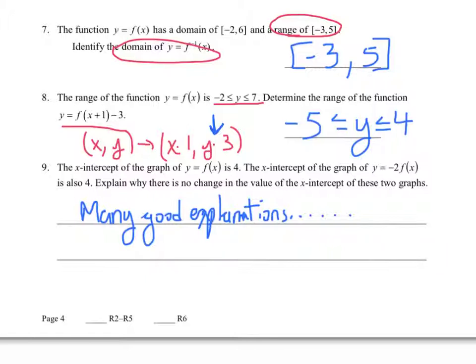So all the y values will go down 3, including this negative 2 and this 7. And so that gives us the answer. Down 3 gives us negative 5 and 4.